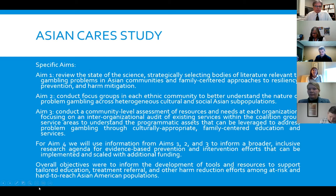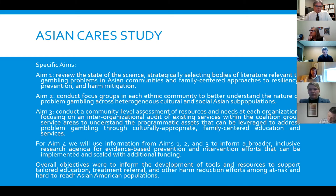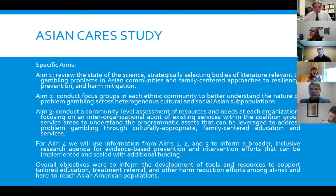The study included specific aims — for example, Aim 1 was to review the state of the science, strategically selecting bodies of literature relevant to gambling problems in Asian communities and family-centered approaches to resiliency, prevention, and harm mitigation. The overall objectives were to inform the development of tools and resources to support tailored education, treatment, referral, and other harm reduction efforts among at-risk and hard-to-reach Asian American populations.